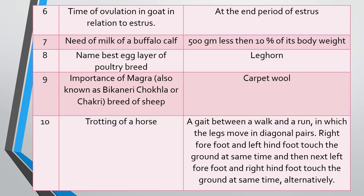Question seven: Milk need of a buffalo calf. An important question: how much milk should we feed to a calf? The appropriate answer is: 500 grams, or less than 10% of its body weight.